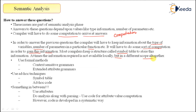At times the information required is not available locally — it may be in a different scope altogether. Accessing information from a different scope means accessing a different function entirely.